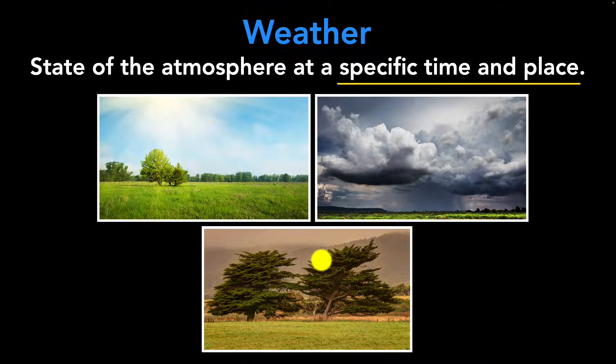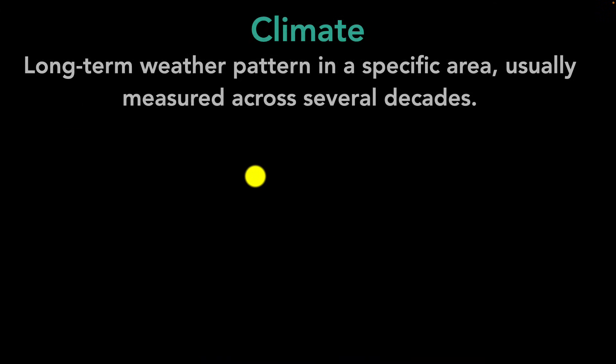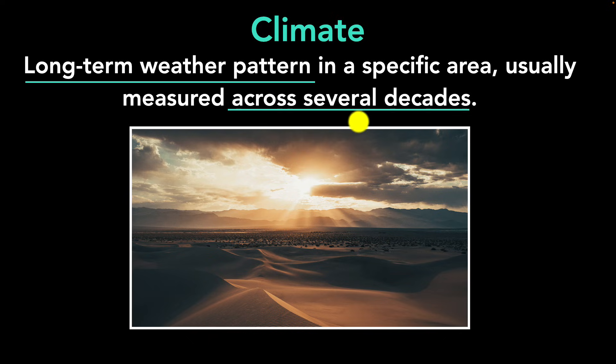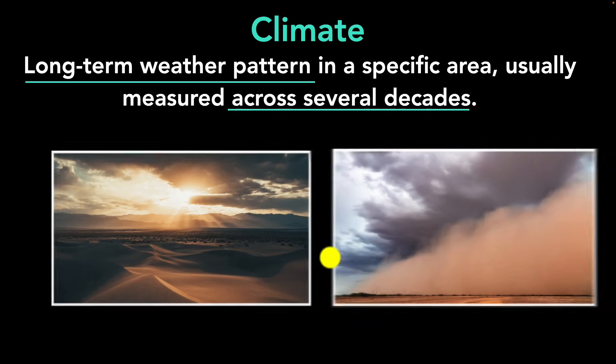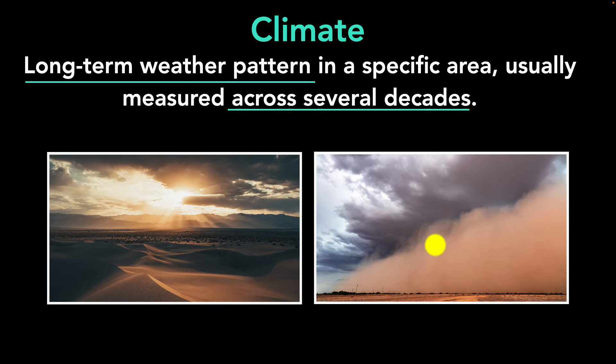It's different from climate. Climate is a long-term weather pattern in specific areas and it's measured across several decades. For example, desert is typically dry and hot. That's the climate. But if there's a certain dust storm in that desert, that will be the weather. Let's dig deeper now.